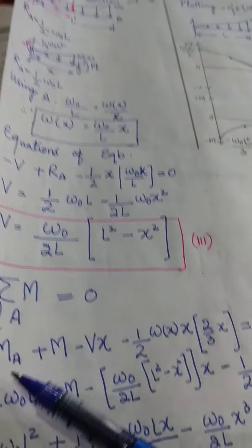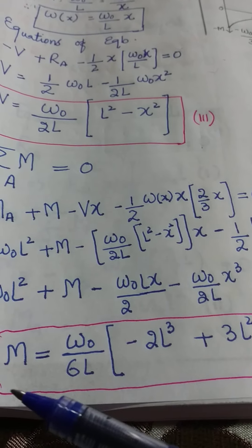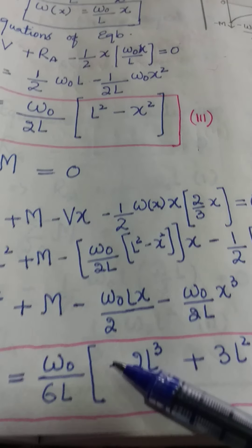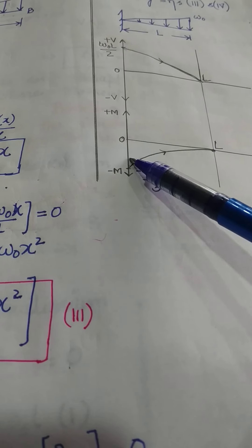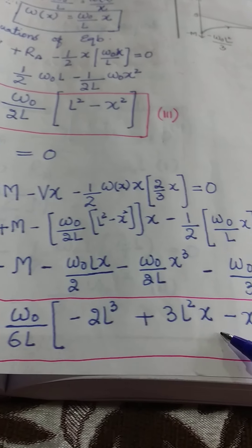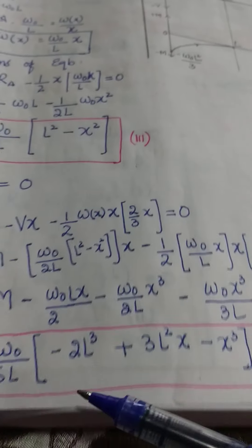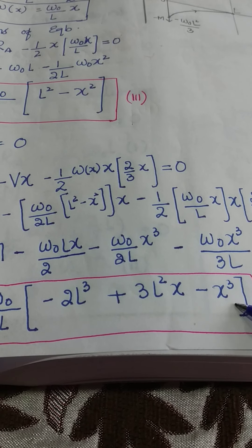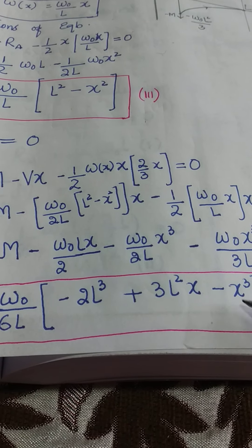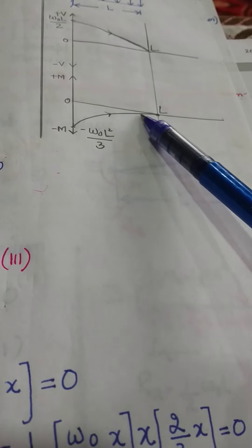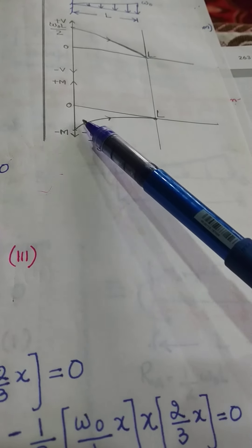This is the shear force diagram. Now for the bending moment diagram: at X equal to 0, the bending moment comes out equal to W naught by 6L times negative 2L cubed, that's negative W naught L squared by 3, which is the bending moment at the fixed end. Substituting X equal to L into the bending moment equation, the entire term comes out equal to 0, so the bending moment at the free end is 0. This equation is a cubic polynomial in X, and taking the second derivative is again negative, indicating the curve varies from negative W naught L squared by 3 to 0, concave downwards.